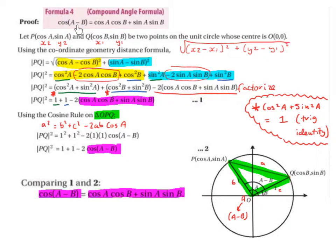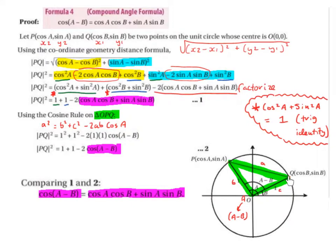So cos(a - b) = cos(a)cos(b) + sin(a)sin(b). We're going to let P = (cos a, sin a) be (x₂, y₂) and Q = (cos b, sin b) be (x₁, y₁). So P and Q are two points on the unit circle whose centre is O(0, 0). Here we have the unit circle, centre (0, 0), with point P at (cos a, sin a) and point Q at (cos b, sin b). We're going to use the coordinate geometry distance formula: √((x₂ - x₁)² + (y₂ - y₁)²) to find the distance from P to Q.